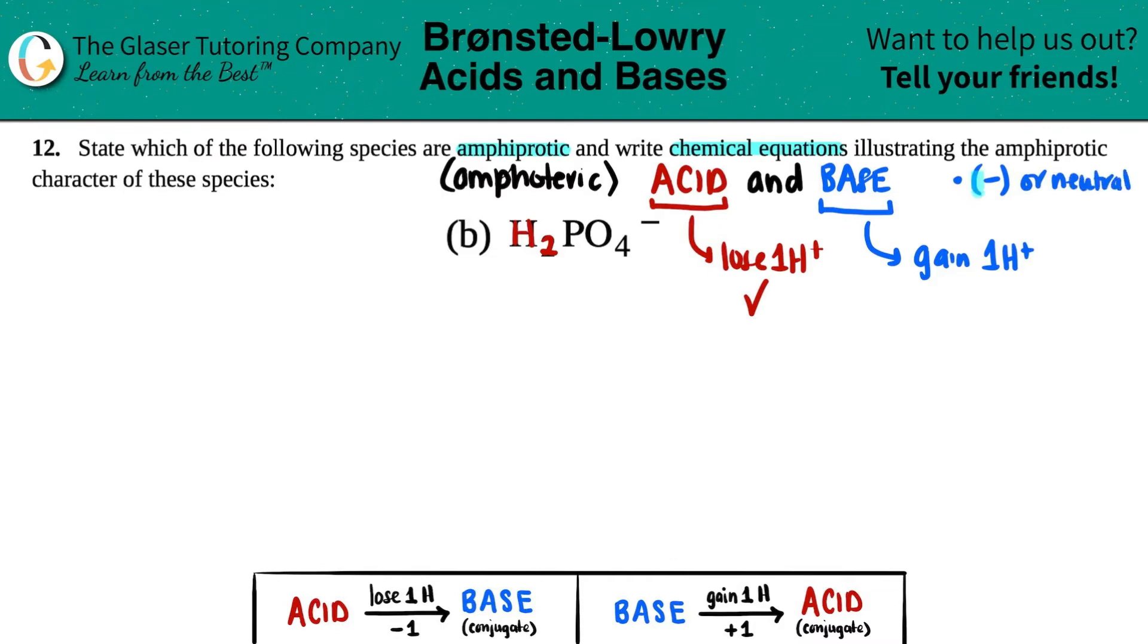But if you definitely have a negative charge it can definitely act as a base, no exceptions. And in H2PO4- there was a negative charge here so we are good to go. So technically H2PO4- is an amphiprotic or an amphoteric species.